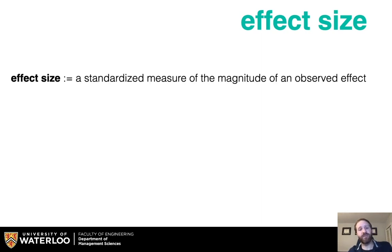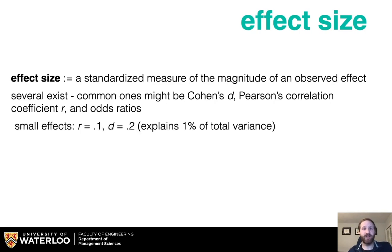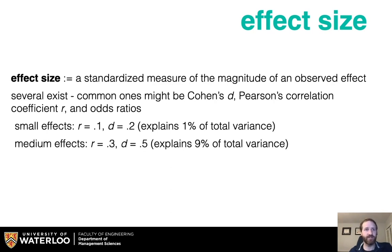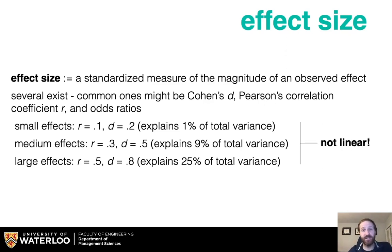We can also show practical significance through effect size. Effect size is a standardized measure of the magnitude of an observed effect. Common ones include Cohen's D, Pearson's correlation coefficient R, and odds ratios. Small effects tend to be around R = 0.1 or D = 0.2, which explains 1% of total variance. Medium and large effects are progressively larger. You can look at these values to understand how much variance is being explained, but it's important to note this is not linear, so you need to understand what a big effect looks like based on the measure used.